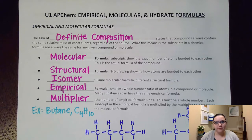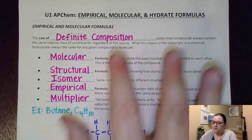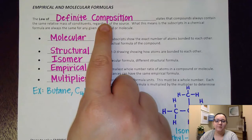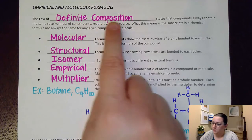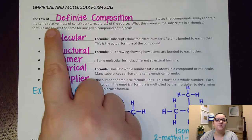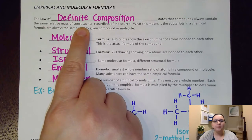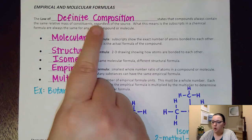I first want to talk about a few terms that I want us to start to get familiar with. The first of those is something called the law of definite composition. Now this law states that compounds always contain the same relative mass of constituents, meaning the pieces that make it up, meaning the elements, regardless of the source.